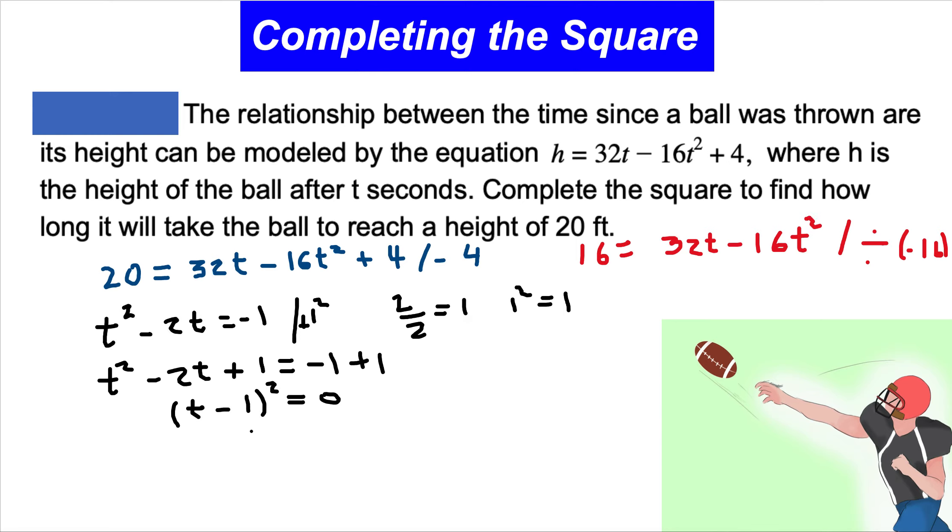Solving this equation for t, we get a single solution: t = 1. When the ball reaches 20 feet, the time is one second. The ball will reach 20 feet in one second.